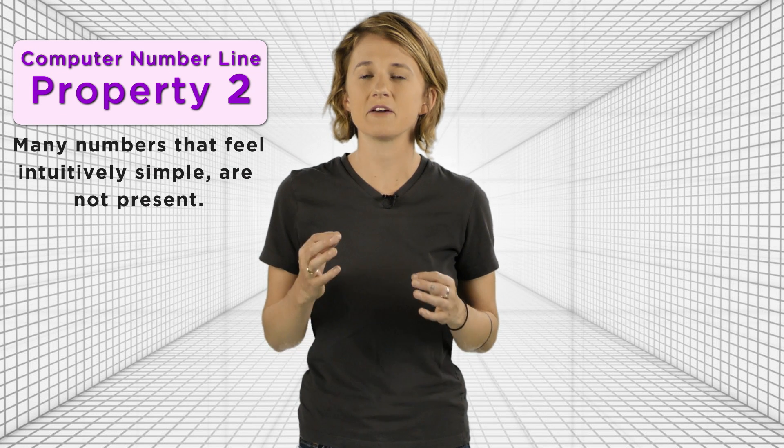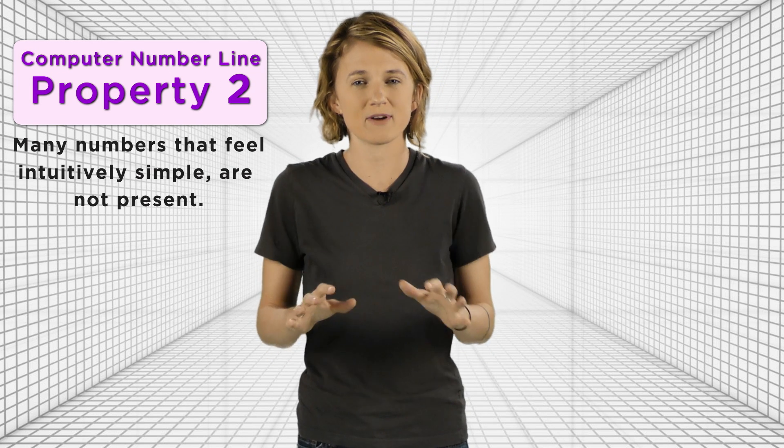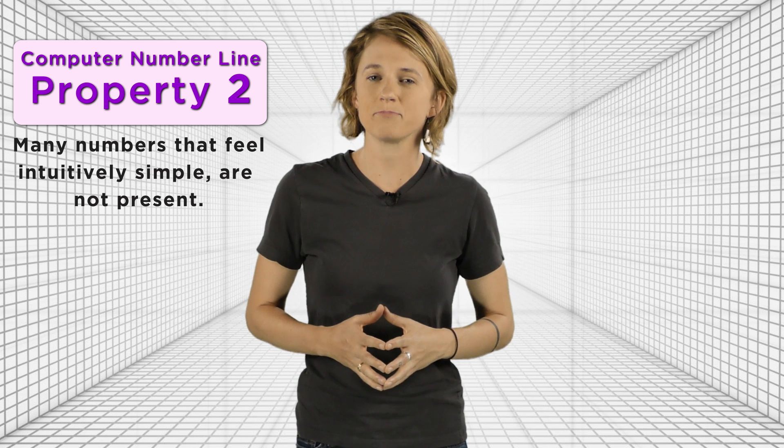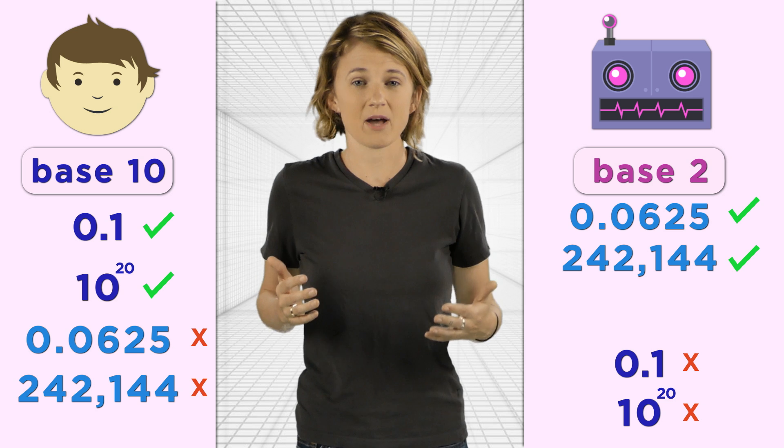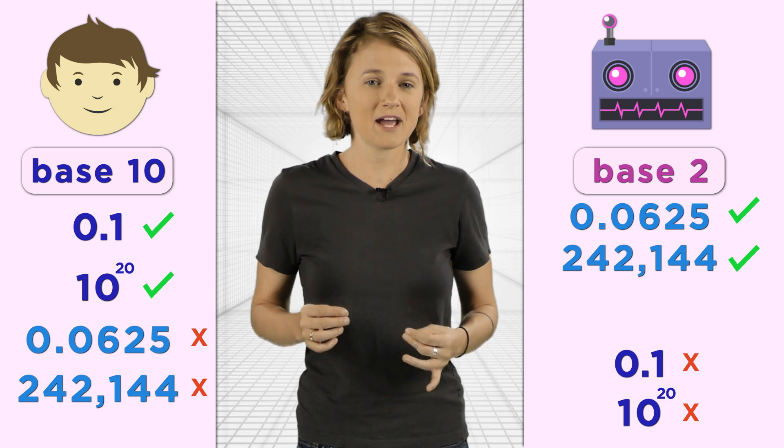Which gets us to the next two surprising properties, both related to exactly which numbers are on this computer version of a number line. Many numbers that feel intuitively simple are not present. We tend to think in base 10 and consider numbers like 0.1 and 10 to the 20th to be more important than 0.0625 or 242144. But computers have the opposite bias, causing some well-known errors.